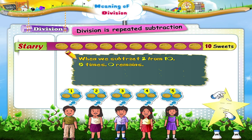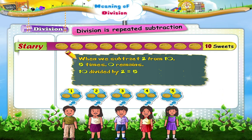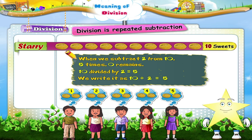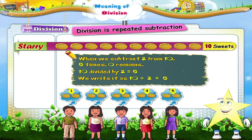What we have actually done, Starry, is ten divided by two equals five, and we write it as ten divided by two equals five. This is the sign for division. You have now learnt how division means repeated subtraction, and from a simple example, you have also learnt how to divide ten sweets equally so that each friend gets two sweets each.